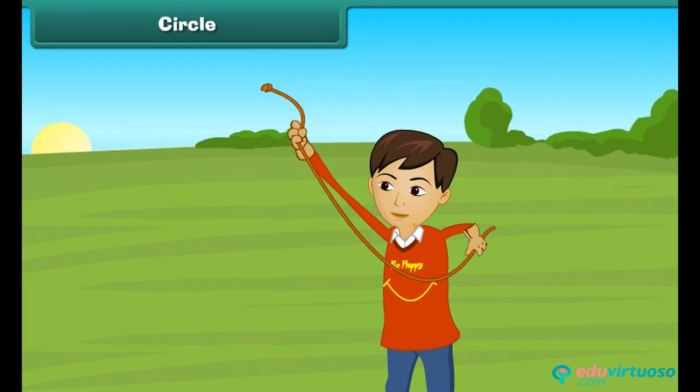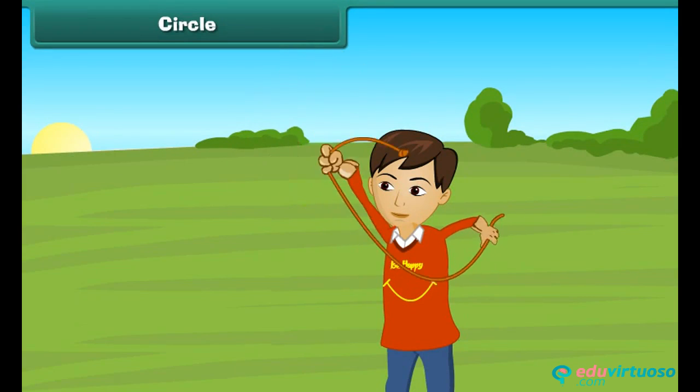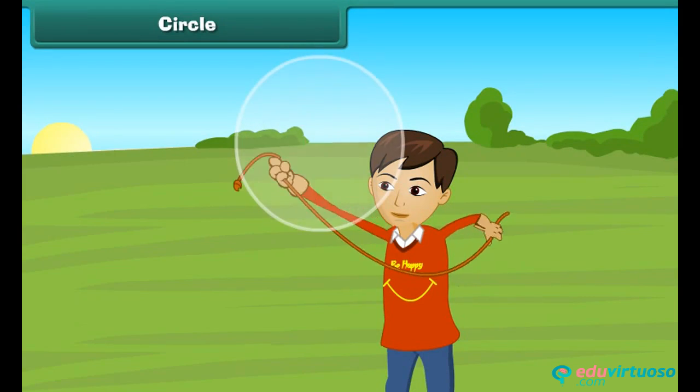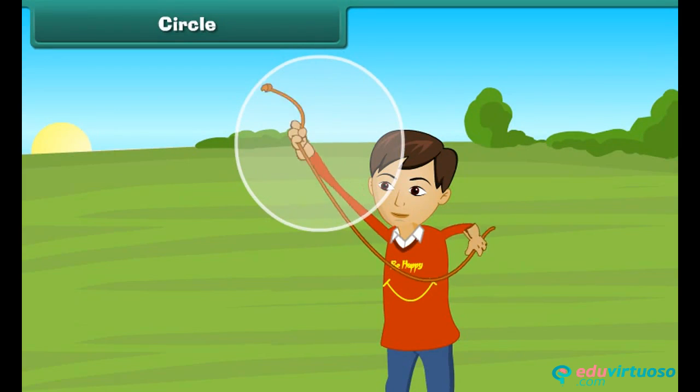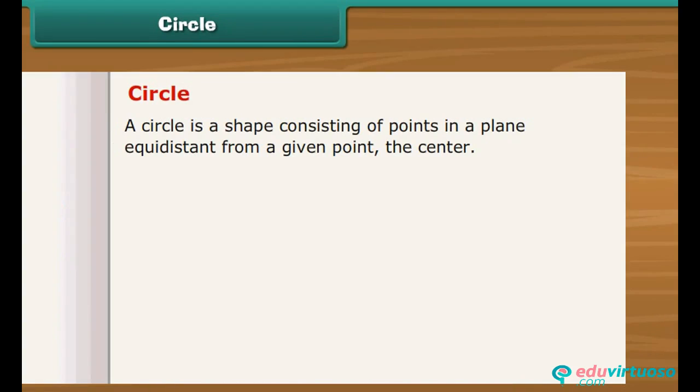Look what Sahil is doing. He is rotating the rope in the air. What shape the knot at the end of the rope is forming? It is circle. A circle is a shape consisting of points in a plane equidistant from a given point, the center.